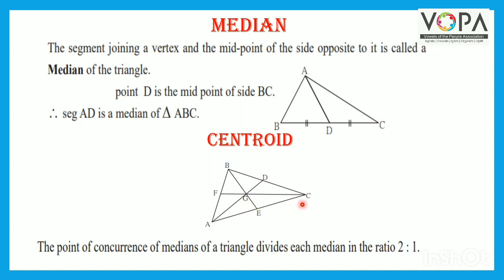Similarly, segment CG is twice than the segment GF and segment BG is twice than segment GE. So the property is the point of concurrence of medians of a triangle divides each median in the ratio 2 is to 1.